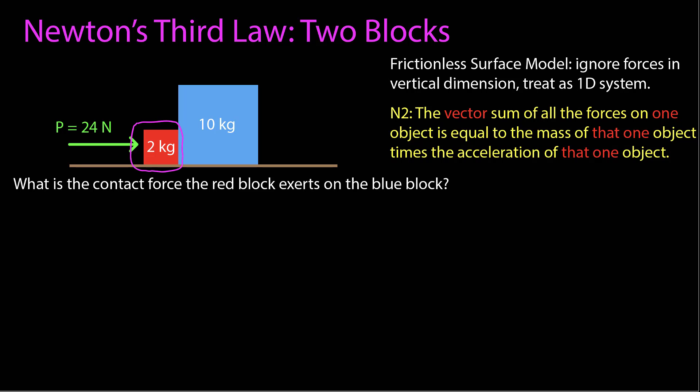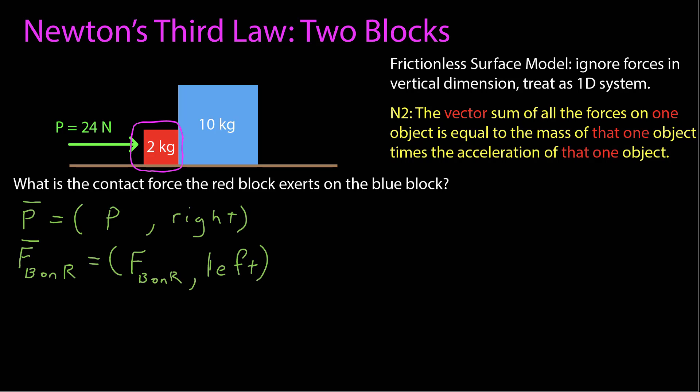Newton's second law says the vector sum of all forces on one object equals the mass of that object times its acceleration. To apply it, I have to choose an individual object, so I'll start with the red block. I'll isolate it and identify the horizontal forces crossing the boundary: a pushing force of 24 newtons (capital P) to the right, and the contact force of the blue block on the red block, labeled F sub B on R, pointing to the left.